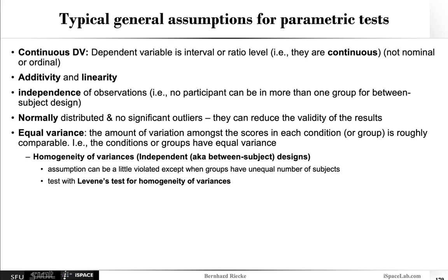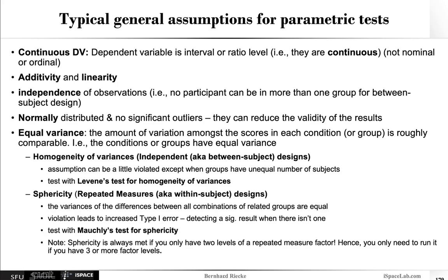Now the equivalence of homogeneity of variance for between subject designs is really the sphericity for repeated measures or within subject designs. So what that really means is that the variances of the differences between all the combinations of related groups should be equal. So if these assumptions are violated, that really can increase the type one error, meaning detecting a significant result when there really isn't one. So you can test this with Mauchly's test for sphericity.